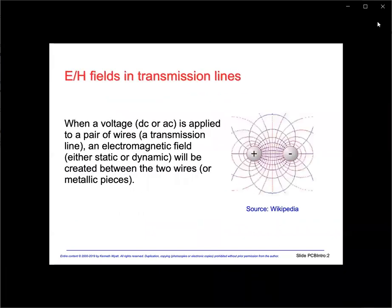There are only three things you can do with electromagnetic fields: they can either be stored, moved, or converted to kinetic energy. To propagate an electromagnetic wave requires a transmission line comprised of two pieces of metal, usually separated by a dielectric. In the case of a standard PC board, this would be the microstrip or stripline and a return plane.